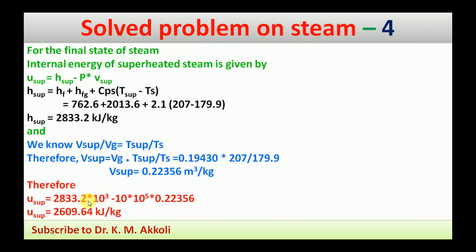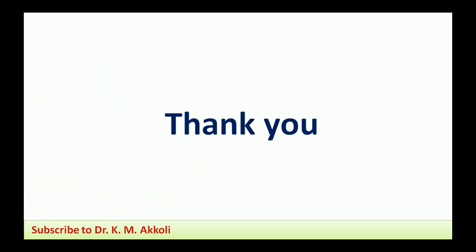After calculation, the internal energy of the final state of the steam is 2609.64 kJ/kg. Like this, we have determined the final state of the steam in terms of the superheated temperature (207°C) and the internal energy (2609.64 kJ/kg). Please subscribe to my channel to watch more videos of these numericals. Thank you for watching.